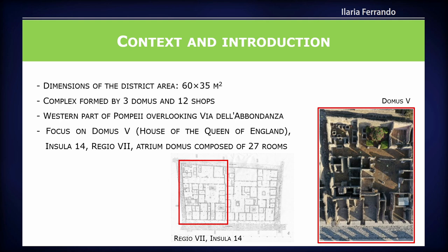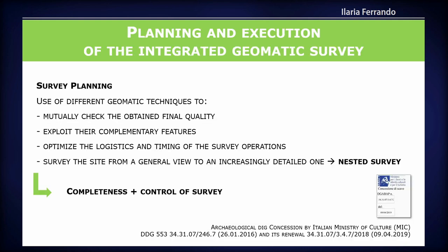We are focusing on just one single room for brevity. Related to the survey planning, we used several different geomatics techniques to check the quality of the derived products, to exploit their complementary features so as not to have holes in the survey, to optimize logistics and timings — because the site was open during our survey — and to have a survey ranging from a general view to an increasingly detailed one, producing a sort of nested survey zooming into the details of the site.